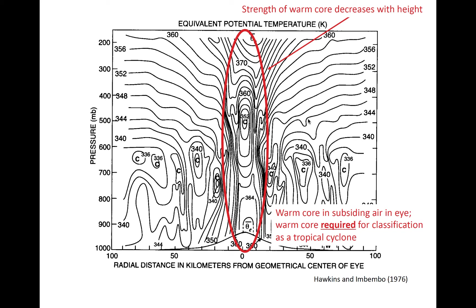Isotherms of theta-e in a tropical cyclone show a warm core center, meaning that theta-e in the center exceeds the theta-e immediately outside of the center at the same pressure level. The radial gradient of theta-e in the inner core represents the magnitude of the warm core. The warm core is a result of dry adiabatic compression of subsiding air in the eye, and the strength of the warm core decreases with height in upper levels. The subsiding warming air causes a minimum in geopotential at the center of the storm, which helps enhance the pressure gradient across the eye wall cloud — it is this pressure gradient that primarily controls the strength of the primary circulation.